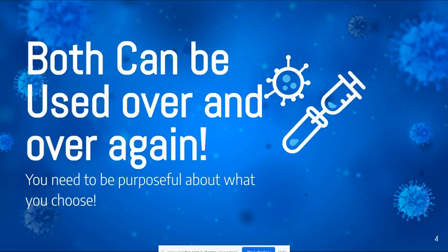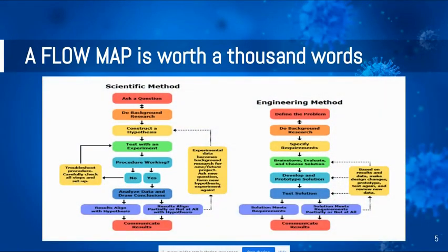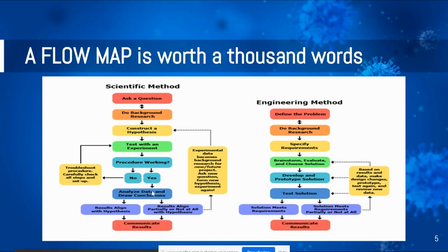You need to be purposeful about which one you choose and when you use it. Let's take a look at a flow map — these visuals help to better understand the differences between the scientific method and the engineering design process. In the scientific method, you'll notice vocabulary such as 'question,' 'hypothesis,' and 'experimenting,' while in the engineering design process we have 'problem,' 'background research,' and 'specifying requirements' such as criteria and constraints. The arrows that run back into the process demonstrate that iterative nature. Both processes end with communication of your results, which is super important in the engineering world.